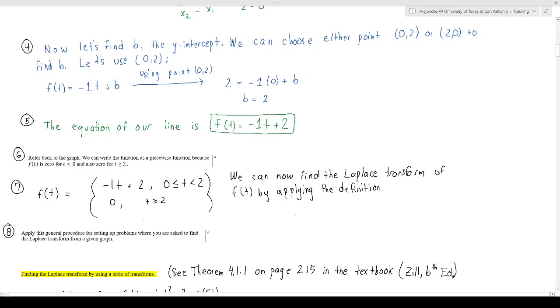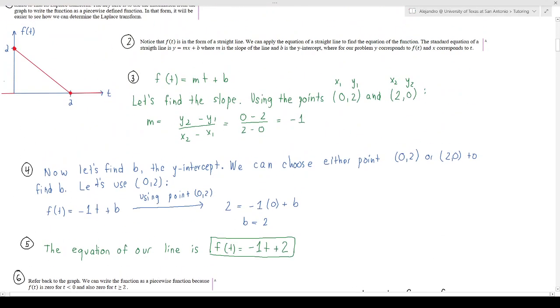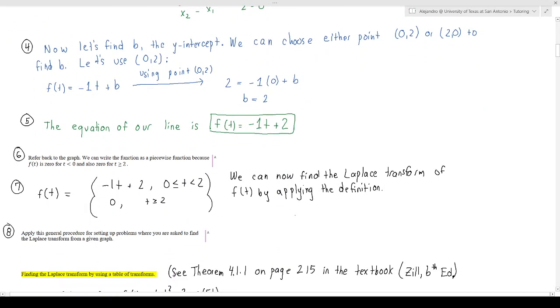But remember we want to write it in the form of a piecewise function. Recall that in the graph we only have the line here when we're between 0 and 2. When t is equal to 0, the line is here, and then we're following the line, following the line, and then at 2 the function turns into 0.